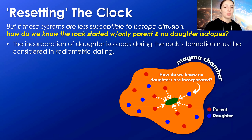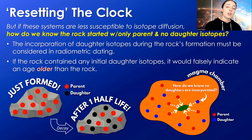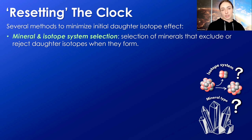Here's the question many of you are already typing in the comments: if these systems are less susceptible to isotopic diffusion, then how do we know the rocks started out with only parent and no daughter isotopes? If the rock contained initial daughter isotopes upon formation, it would falsely indicate an age much older than the rock actually is. There are several methods we use to minimize this initial daughter isotope effect, and they're often dependent on the mineral and isotope system being used.